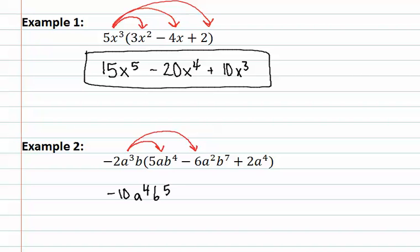We now move on to the second term. When we multiply the two next terms, we have negative 2 times negative 6, which gives us a positive 12. We then have a to the third and a to the second, which add to become a to the fifth. Finally, we have b and b to the seventh, which add to become b to the eighth.